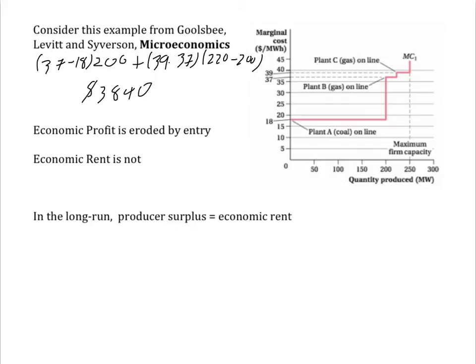Strictly speaking, the rent is a characteristic of the energy source. But who gets it is a matter of the relative bargaining power of the owner of the energy source and the owner of the electricity generating plant. The key point is that competitive markets harness the most productive resources first. As demand expands, we turn to progressively more expensive resources, creating economic rent for the more productive resource and generating an upward sloping long-run supply curve. The difference between economic profit and economic rent is that economic profit will be eroded by entry, whereas economic rent is not. In the long run, economic rent is producer surplus.